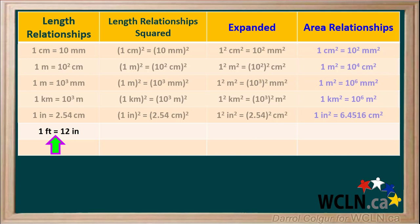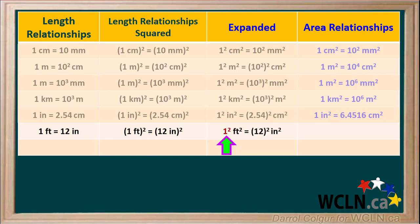In the imperial system, we know that one foot is equal to twelve inches. Squaring both sides gives us one foot all squared is equal to twelve inches all squared. Expanding it: one squared equals one and twelve squared equals one hundred and forty four. So an area of one square foot is the same as one hundred and forty four square inches.